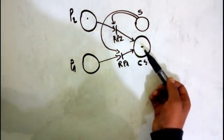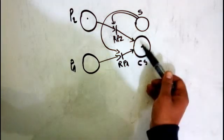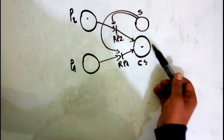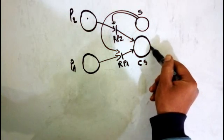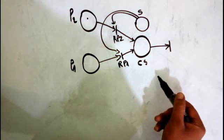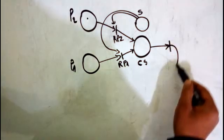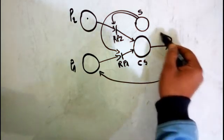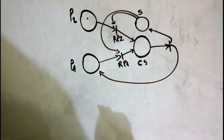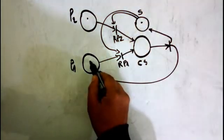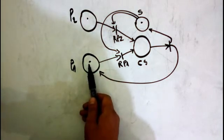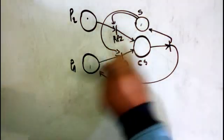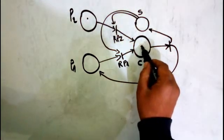At this point, the other transition cannot run because it also needs one token in the semaphore. That's how to use the semaphore. Now, how to liberate the critical section: if a process finishes its job and wants to liberate the critical section, we just make a transition here, and we return one token back to the semaphore.